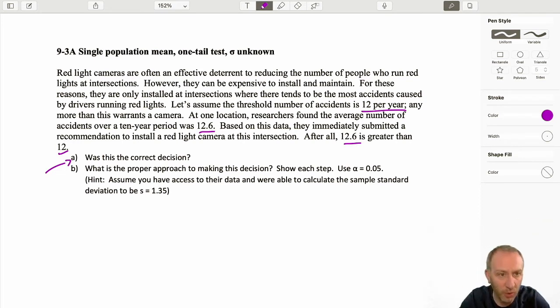So those 10 years, those 10 observations, those would be individual observations. Whether or not that constitutes a population average, an actual average that is greater than 12, well that's the purpose of testing. Is that difference, which is really just 0.6, is that difference statistically significant? Or is it just the result of the random nature of the number of accidents that happen year after year? Is it due simply to the variation that exists within that sample?